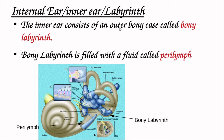The inner ear consists of an outer bony case called the bony labyrinth. Inside the bony labyrinth there is a space, and within it sits the membranous labyrinth — a coiled membranous structure of the same shape. The bony labyrinth is the outer bony covering case for the membranous labyrinth. The space between them — inside the bony labyrinth — is filled with a fluid called perilymph.